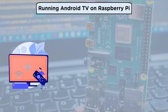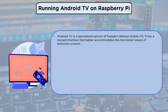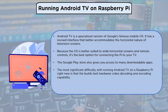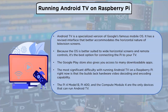Running Android TV on Raspberry Pi: Android TV is a specialized version of Google's mobile operating system with a revised interface suited to horizontal television screens. The Google Play Store gives you access to many downloadable apps. The main difficulty is that builds lack hardware video decoding and encoding capabilities. The Pi 4 Module B, Pi 400, and Compute Module 4 are the only devices that can run Android TV.